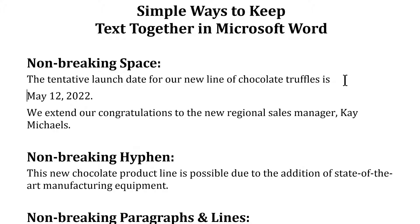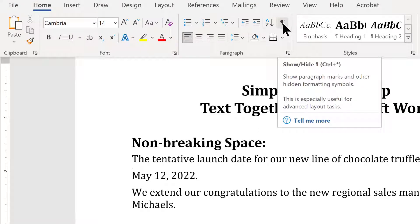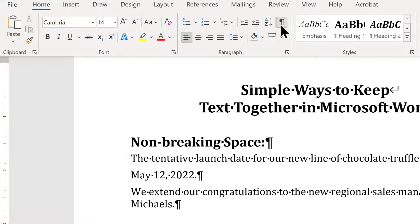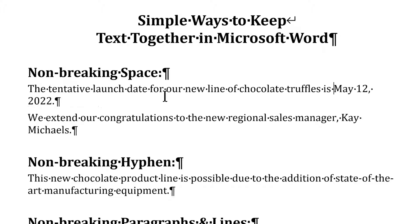This would be a lot easier to see if we also turn on a feature called Show/Hide. This is in the Home tab in the paragraph group — it's simply this paragraph mark. This will display non-printing characters so they won't show when the document is printed. Then we can see in our document what are called soft spaces, where we see dots between the words. So I'll delete this hard return I put in earlier, and instead we'll create non-breaking spaces.